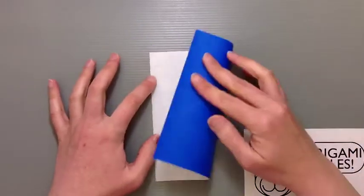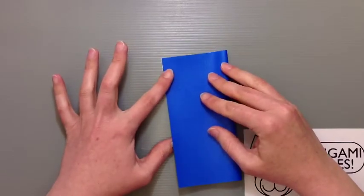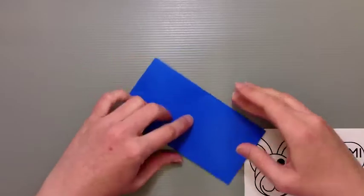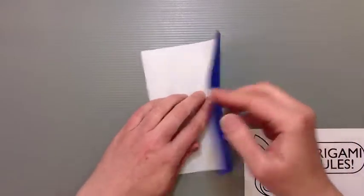We're going to have our color side facing down. I want to just go ahead and fold my paper in half both vertically and horizontally. I'm going to fold one way here and then I'm going to fold the other way and keep it folded in half.